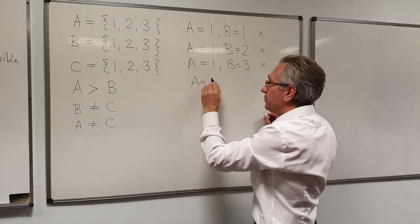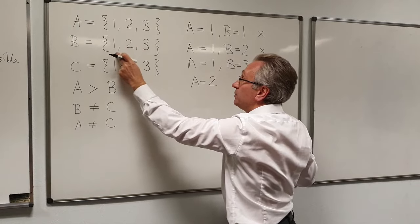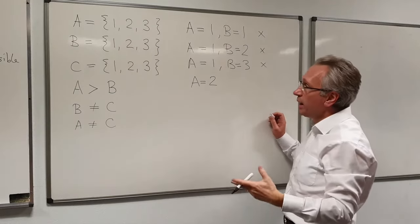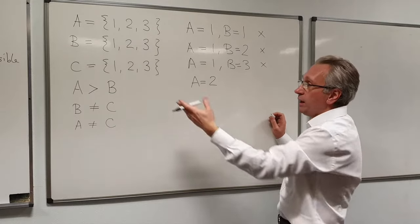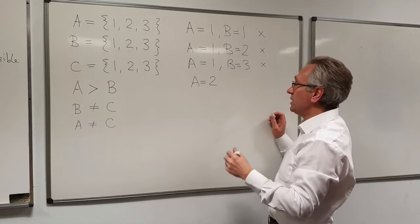So at this point, we've tried all the possible values for B. We can't backtrack onto another value. So we need to go back to A and backtrack on that. So we now try a different value for A. We've tried that one and we've found that we can't have a value for B. So now we're going to try that one. So A equals 2. That's okay. A greater than B, B is not equal to C, A not equal to C, that's fine.